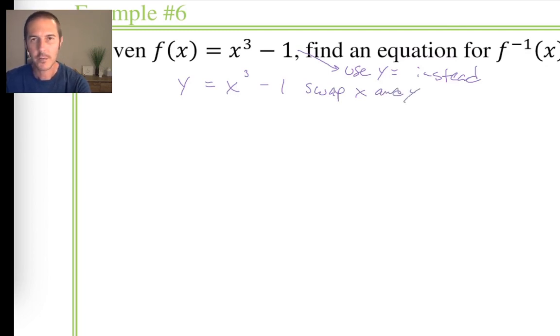So my first step is use y equals instead. So I've rewritten my function using y equals. The next thing I'm going to do is actually take my x and y values, my variables, and swap them. The way that I'm phrasing this might be a little bit different than the way it was phrased in the text on that previous slide, which is good because how I'm phrasing it might not resonate as well with you. If that's the case, use the way that it was written out. I want you to use the method and the language that works most consistently for you.